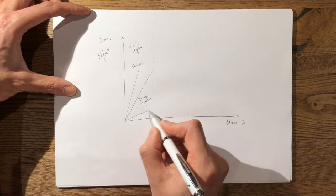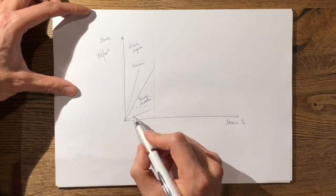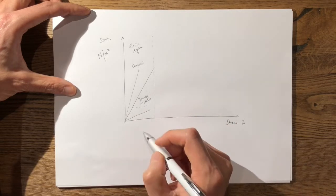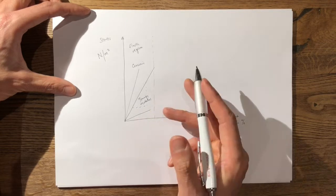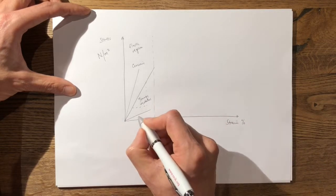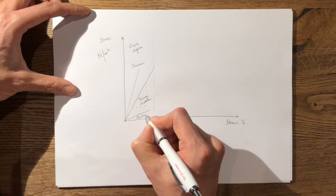The more shallow the gradient or the smaller the Young's modulus, this means that material is less stiff such as cartilage or tendon.